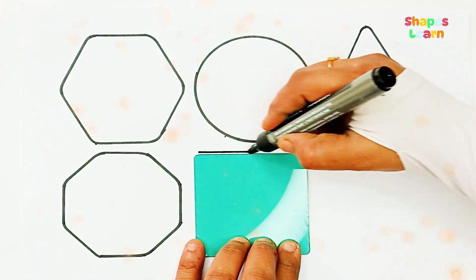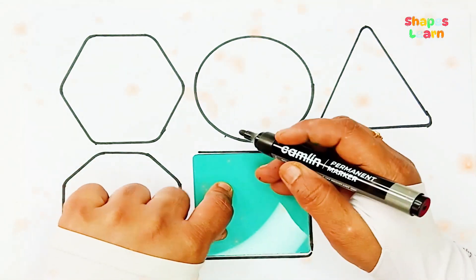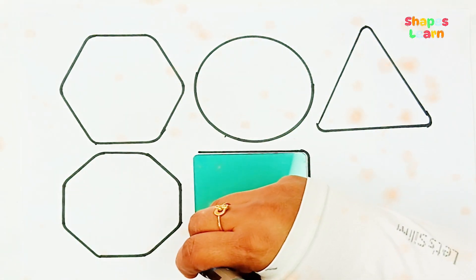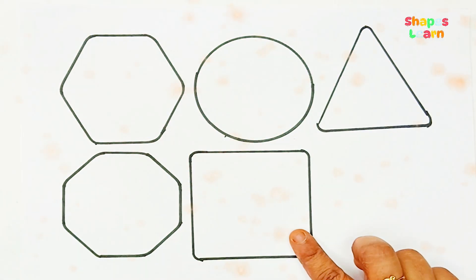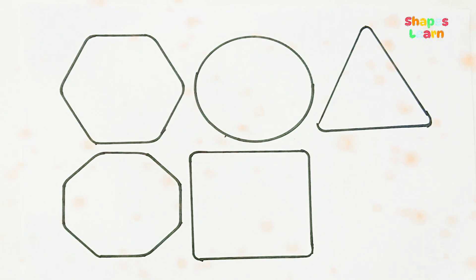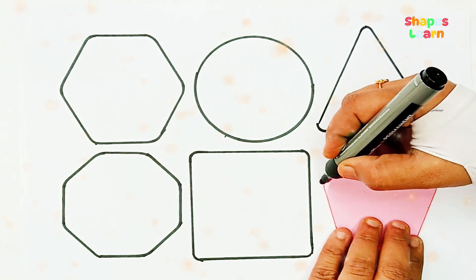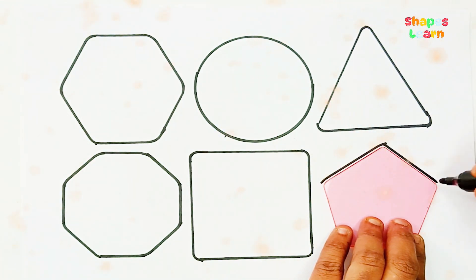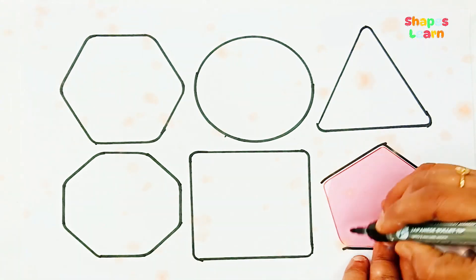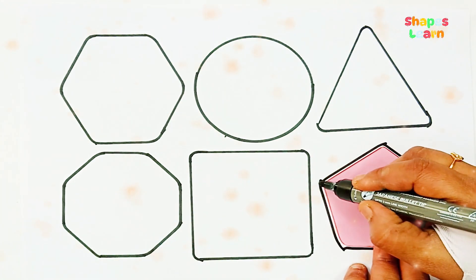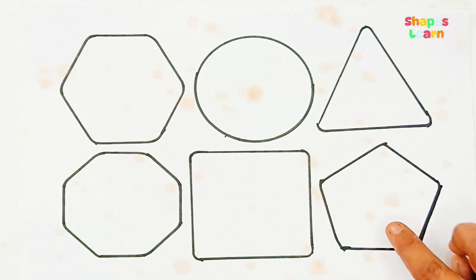Square. A, B, C, D, E, F, G, H, I, J, K, L, M, N, O, P, Q, R, S, T, U, V, W, X, Y, and Z. Now I know my ABCs, next time won't you sing with me? Pentagon.